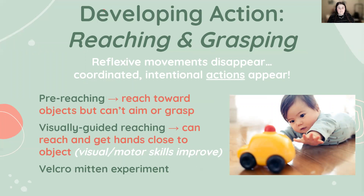We also have visually guided reaching, which occurs with more maturity in visual and motor development, allowing infants to get their hands closer to objects around three months. In an interesting study, researchers put Velcro-covered mittens on three-month-old babies' hands and placed Velcro objects within reach. The mitten group could successfully connect to objects — a supported form of grasping. Results showed the mitten group had greater interest in and skill at grasping objects when later tested without mittens, showing that reaching and grasping can be accelerated with support.